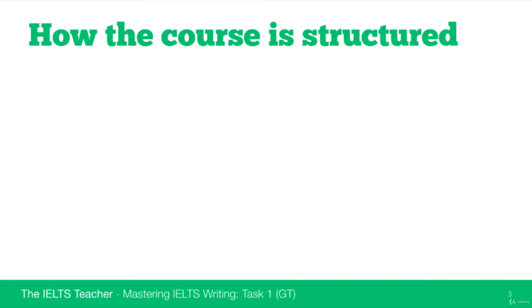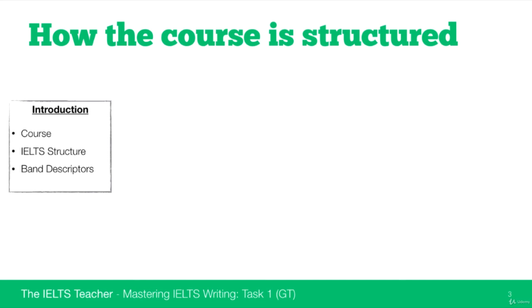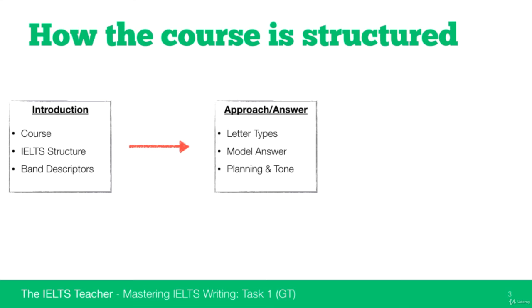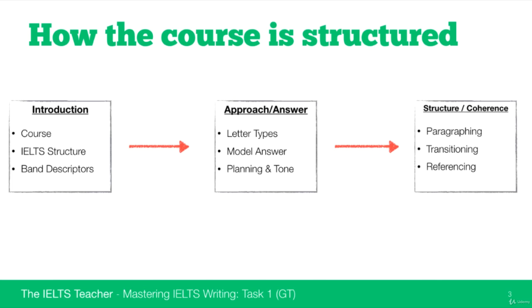The first section is this introduction, where we talk about the course itself, how it's structured, what you can expect from it. We'll also talk about how the IELTS exam is structured and the band descriptors — the individual categories and the criteria which make up those categories. After this section, we'll look at how to approach and answer the task by writing your letter, thinking about different letter types, planning and tone. We'll also look at structure and coherence — paragraphing, transitioning between ideas and paragraphs, using cohesive devices, and referencing.